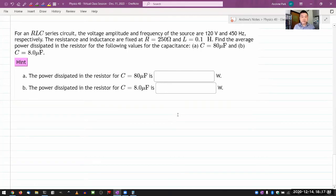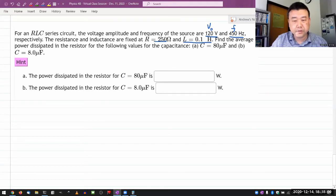So this question says, for an RLC series circuit, it's giving me the voltage amplitude and frequency. Let me start by giving it some label. Voltage amplitude and frequency.